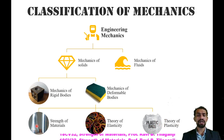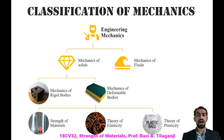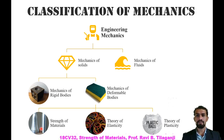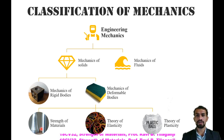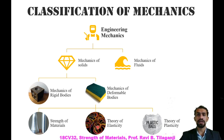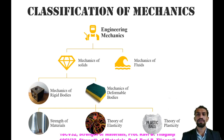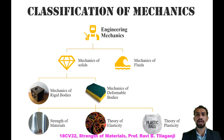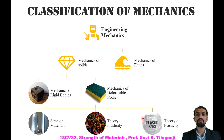Strength of materials — as seen with two steel rods in the picture — deals with how much strength a steel rod or any other material can take. Theory of elasticity is related to the elasticity present in any material, which allows us to calculate how much the body can regain its original shape and size after unloading.